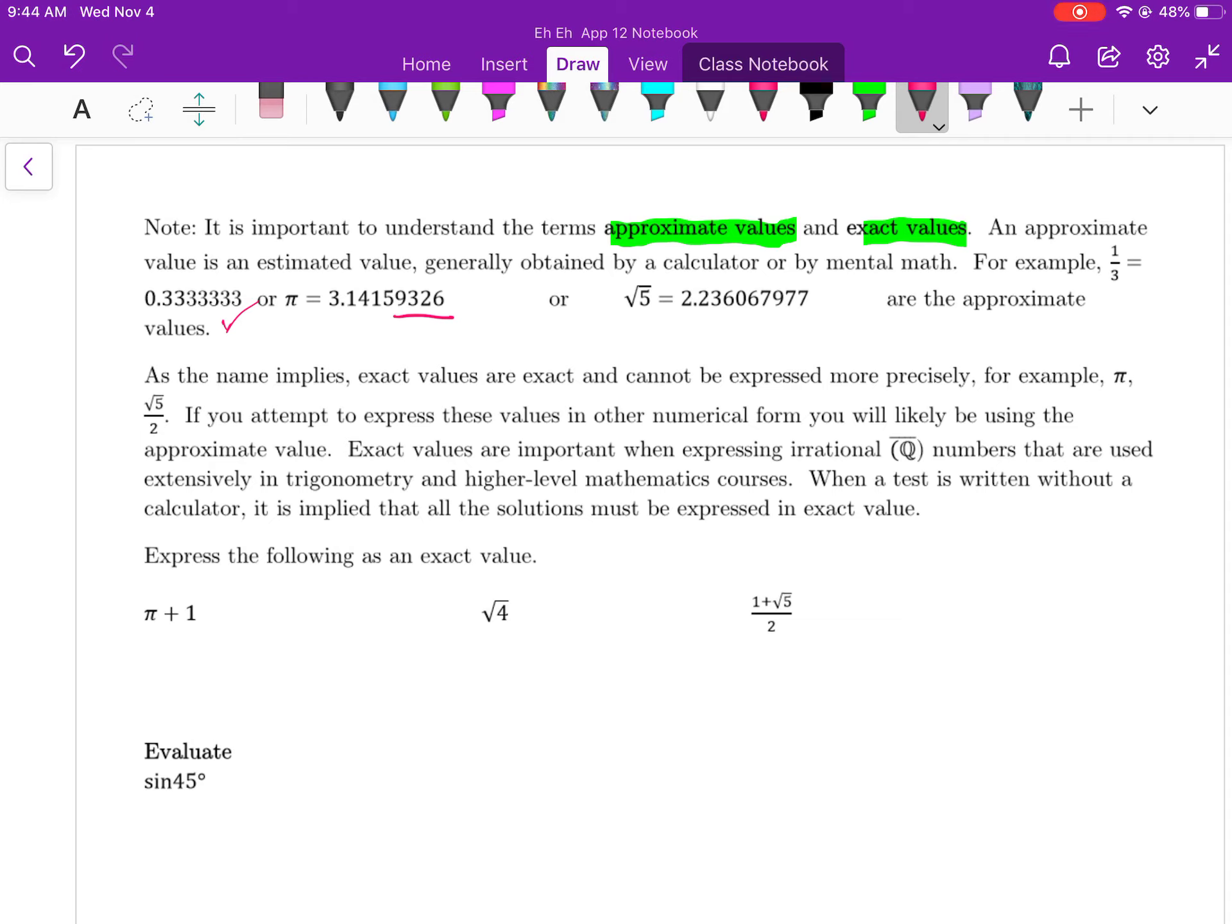1 over 3 is equal to 0.33333, so that is approximately correct, not exactly. Or another approximate value is pi is equal to 3.14159. That is also approximate value. Because pi has an infinite number of decimal places and no matter how hard we try, we cannot get it exactly. You can get it close, approximately, but never exactly.